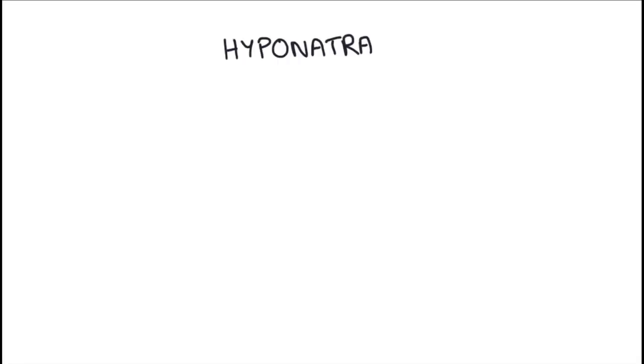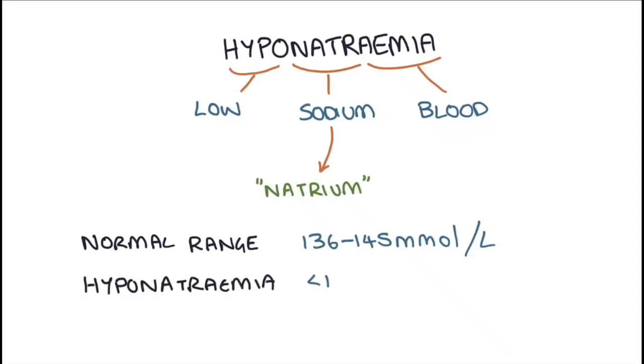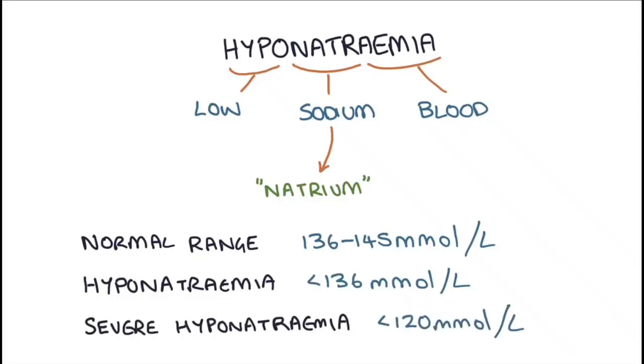I wanted to make a video about hyponatremia, which is a low concentration of sodium in the blood. Just remember sodium in Latin is natrium, which is why we call it natremia. The normal range for sodium is between 136 to 145 millimoles per liter, and hyponatremia is anything below 136 millimoles per liter. Severe hyponatremia is below 120 millimoles per liter.